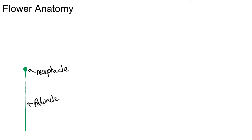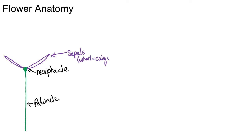We have a series of four whorls contained within each other — think of concentric circles. The outermost whorl is composed of sepals, and as a whorl all together we call it the calyx. Within that we have the petals, and as a whorl they are called the corolla.